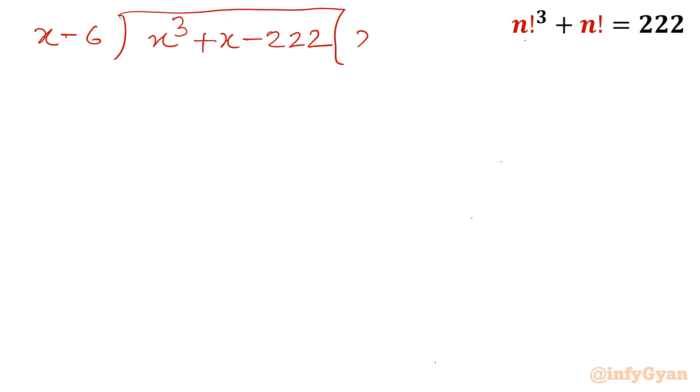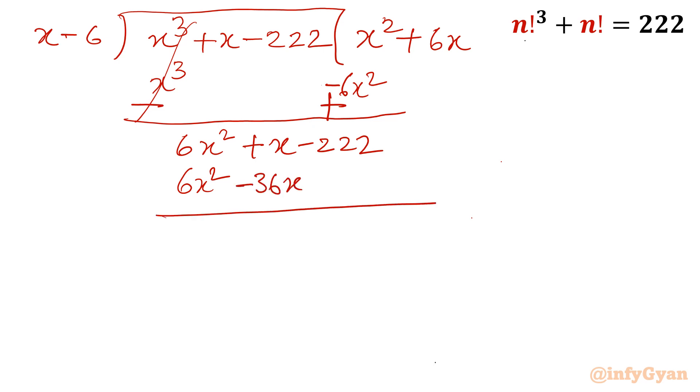So I am going to divide x cube plus x minus 222 by x minus 6. I will take x square, so x cube done. x into x square is x cube minus 6 into x square. I have to write here minus 6x square because no term is there with x square. So let me change of sign. This will get cancelled. What would be left? 6x square plus x minus 222. Then I will multiply by 6x, so it will give us 6x square minus 36x.